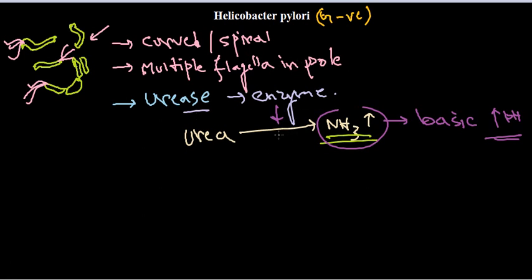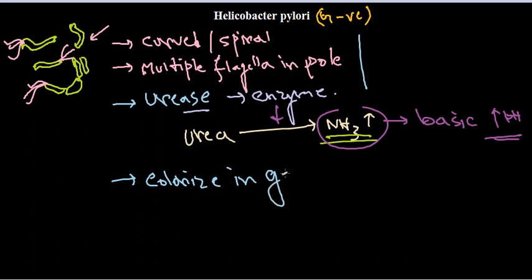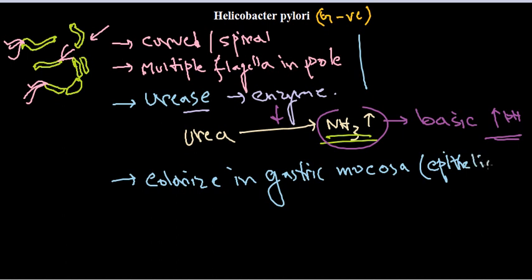Another important property is that Helicobacter pylori colonizes in the gastric mucosa or gastric epithelial cells. The significance of the urease property will be studied later. They usually colonize in the gastric epithelial cells or gastric mucosa.